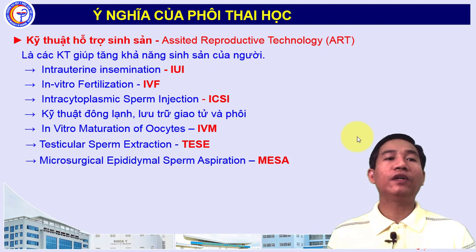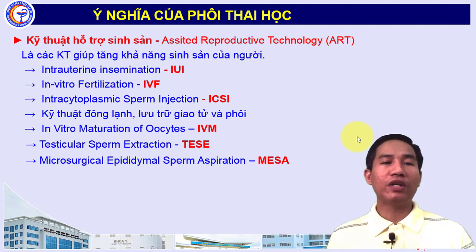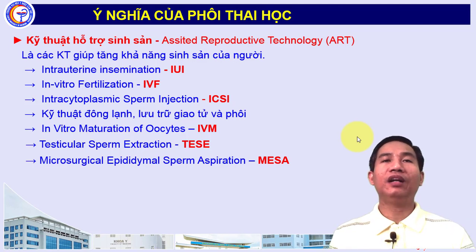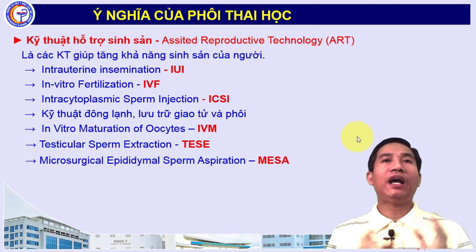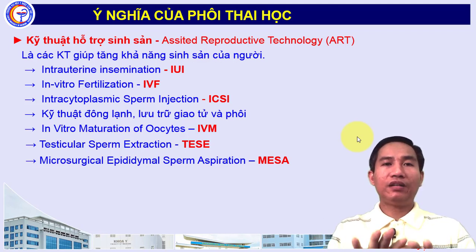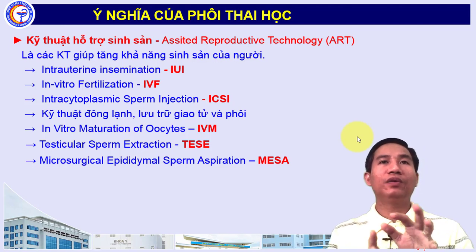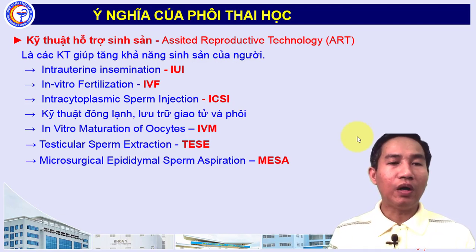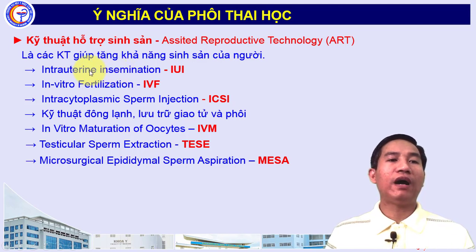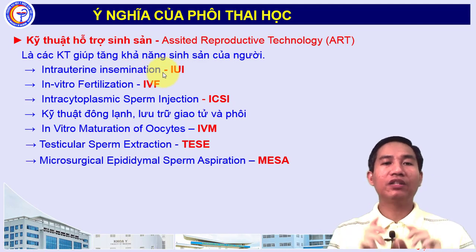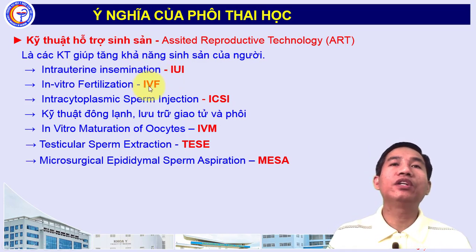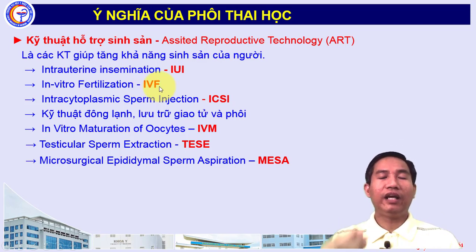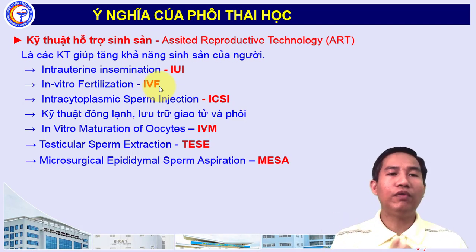Một lĩnh vực quan trọng nữa là điều trị hiếm muộn với các kỹ thuật hỗ trợ sinh sản hiện đại (ART), giúp tăng khả năng sinh sản, mang thai và sinh con. Các kỹ thuật bao gồm IUI (bơm tinh trùng vào tử cung), IVF (thụ tinh trong ống nghiệm và chuyển phôi - nuôi dưỡng phôi sau đó chuyển vào buồng tử cung).